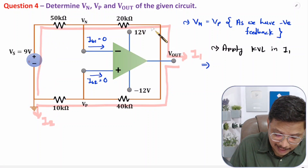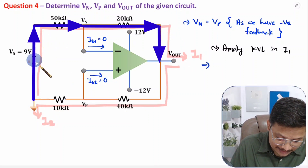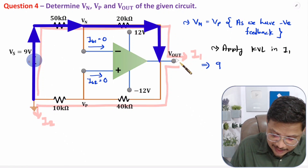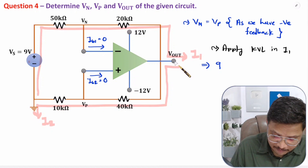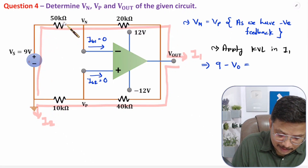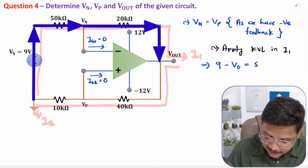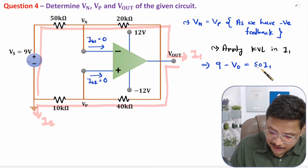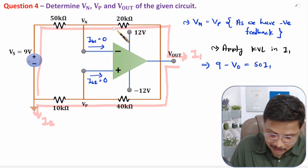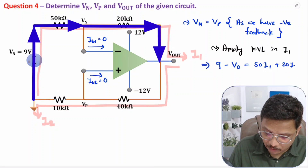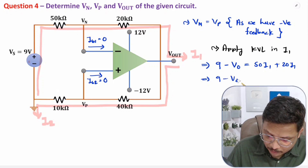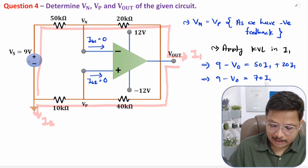I will be writing KVL equations for loop I1 and loop I2. Applying KVL in loop I1: the 9 volt source goes from minus to plus, so I write plus 9; Vout goes from plus to minus, so I write minus Vout. The resistance is 50 kilo ohm with current I1, plus 20 kilo ohm with current I1. So the equation becomes: 9 minus Vout equals 70 I1.